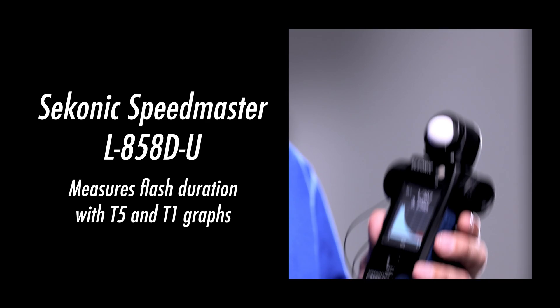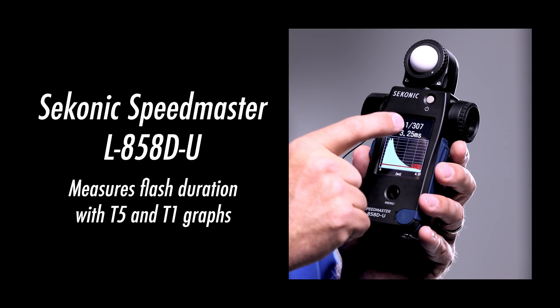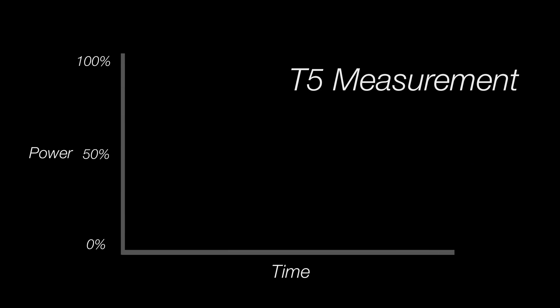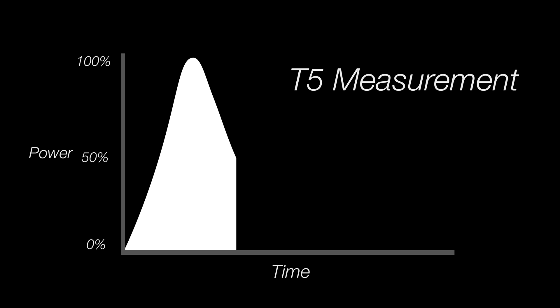You can use a light meter like the Sekonic Speedmaster L-855DU to measure the flash duration of your lights. It will give you a graph showing the intensity of the light from the beginning of the flash cycle up to full output and then back down until the flash tube turns off. On this flash duration chart, T5 is a measurement of the time it takes for the flash unit to ramp up to full power and back down until 50% of the light has been dissipated. Manufacturers like to use T5 measurements when marketing their equipment because T5 makes flash durations appear shorter than they really are — but in reality there is a whole tail that is going to cause blur.